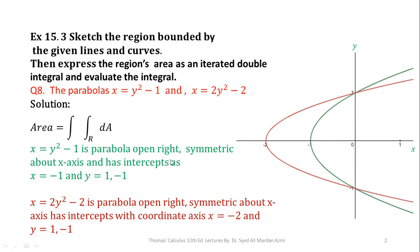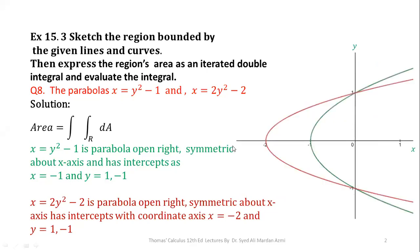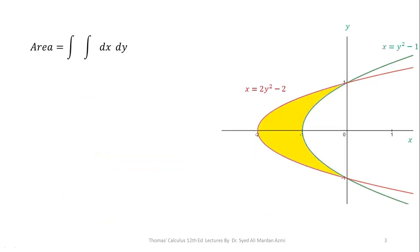And now this is the graph of both parabolas. The first parabola x = y² - 1 is indicated with green color and the second parabola x = 2y² - 2 is indicated with reddish color. Then their common boundary region is this portion, as x-axis and y-axis are not involved in our boundaries. So this is our required region of integration.